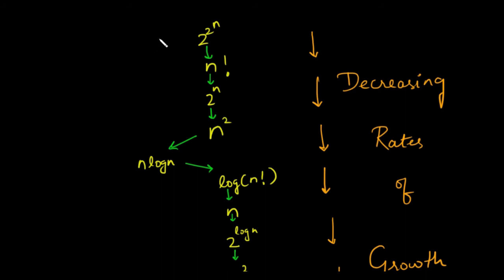This means that Big O of 2^(2^n) is worse than Big O of n factorial, which is worse than Big O of 2^n, which is again worse than the time complexity Big O of n^2 and so on.